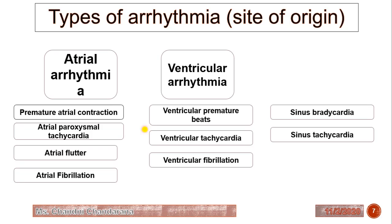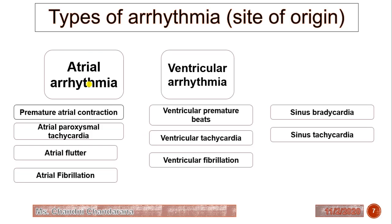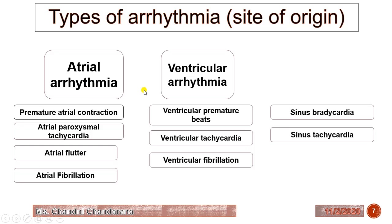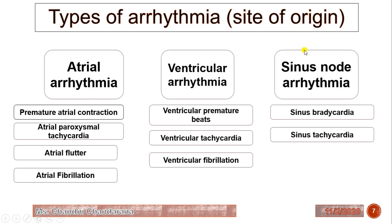Now we will see the types of arrhythmia. As per the site of origin, arrhythmia is classified into three types: atrial arrhythmia, ventricular arrhythmia, and sinus node arrhythmia. Atrial arrhythmia occurs in the atrium, ventricular arrhythmia occurs in the ventricle, and sinus node arrhythmia originates from the SA node, the pacemaker of the heart. The normal heartbeat is in the range of 60 to 100 beats per minute.